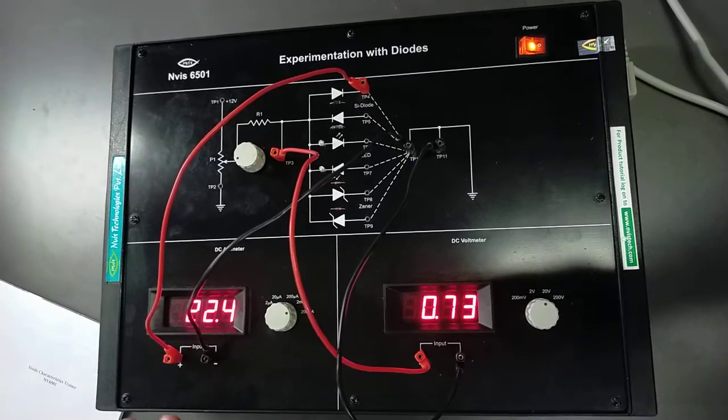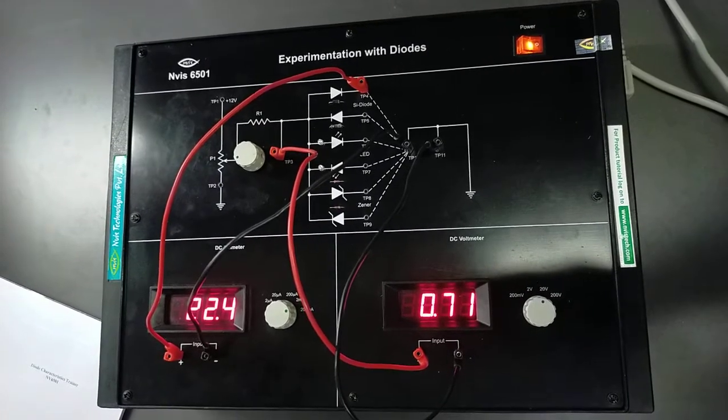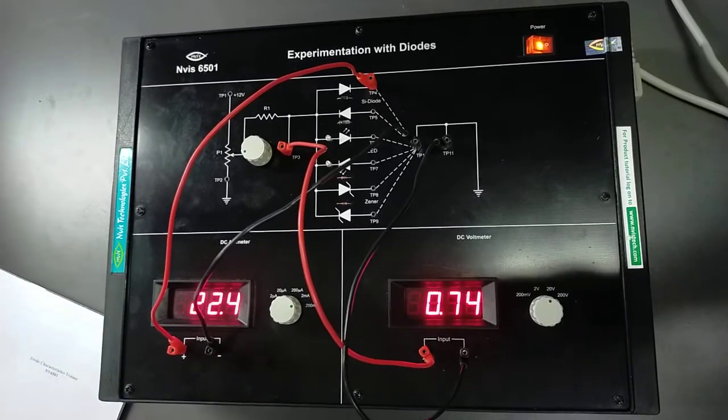Now with the help of values, we can draw the curves between the current and the voltage. So here we can see current is increasing.